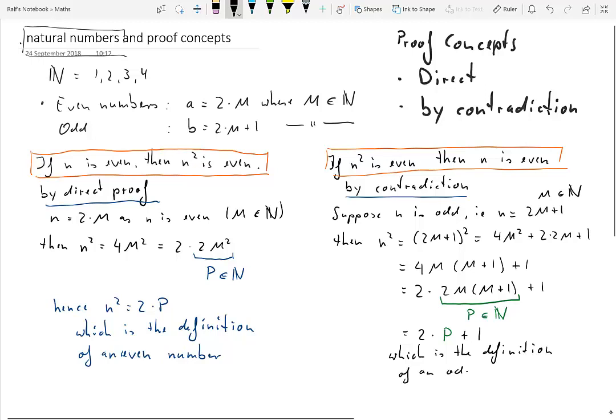So this implies that if we start out with n as an odd number, n squared has to be an odd number. That then by contradiction means that n squared can only be even if n is even as well. So n squared is even if and only if n is even as well.